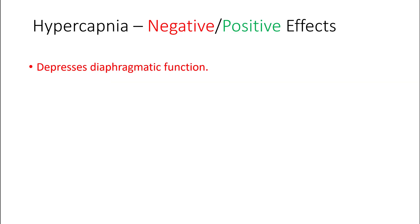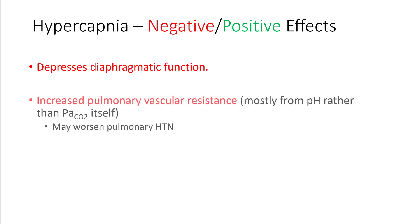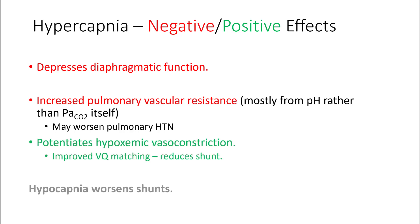Hypercapnia similarly depresses diaphragmatic function. It also increases pulmonary vessel resistance, and the effect is mostly from the pH; therefore, it can worsen pulmonary hypertension. However, hypercapnia potentiates hypoxemic vasoconstriction, therefore improves VQ matching, and therefore reduces shunt. Hypocapnia, on the other hand, worsens shunt.